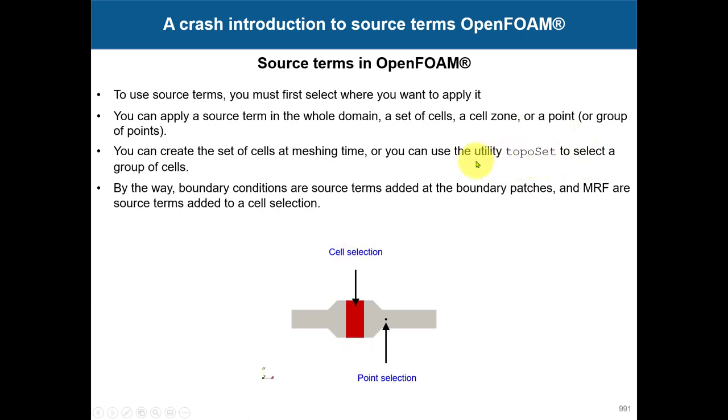To do this cell selection, you can use topoSet or you can create it at mesh time. Here I'm going to show you how to do it with topoSet and introduce a little bit this utility. We have seen it already, but just to show how the dictionary is organized. I would like to point out that boundary conditions are source terms. If you didn't know that, it's a source term because you are forcing the solution to be equal to a value.